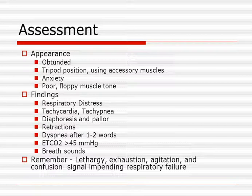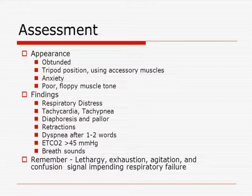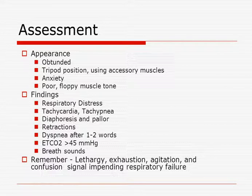Things to look for: are they obtunded, able to follow commands? Are they in a tripod position or sniffing position, using accessory muscles? Are they anxious — anxious because they can't breathe or because they're hypoxic? Do they have poor, floppy muscle tone? You'll find respiratory distress, tachycardia, orthopnea, diaphoresis, intercostal retractions, supraclavicular retractions, supraepigastric retractions, dyspnea after one to two words, and end-tidal CO2 greater than 45 or below 35 mmHg. Lethargy, exhaustion, agitation, and confusion signal impending respiratory failure — make sure you address it before it becomes a huge problem and get your intubation equipment ready.